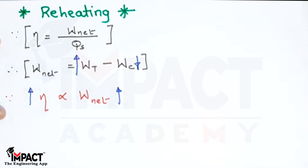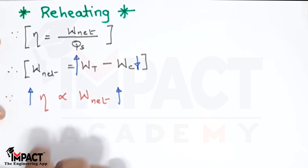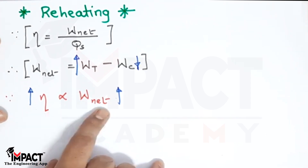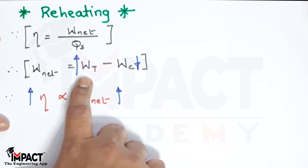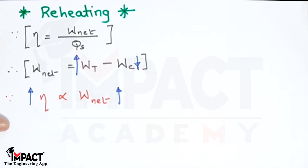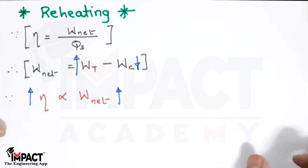Another method to increase efficiency is to reduce the heat supply, for which we use the regeneration method — I have covered that in one of my other videos, so the link will be provided in the description below. Now since efficiency is directly proportional to W_net, I will quickly draw the diagram to show how the cycle looks.